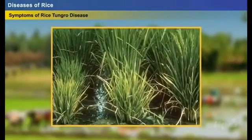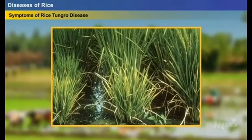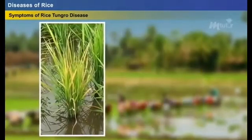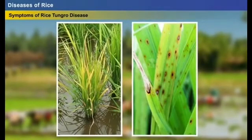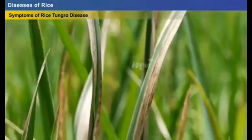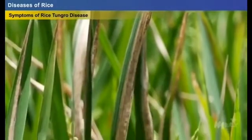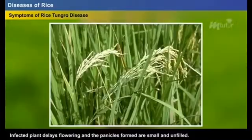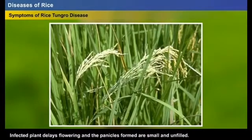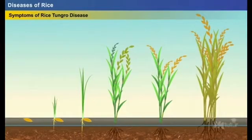Symptoms of rice tungro disease: the infected plants show stunted growth or reduced tillering. The leaves turn yellow or orange-yellowish in color and may develop rust-colored spots. The discoloration starts from the leaf tip and extends down to the blade and lower portion of the leaf. Infected plants delay flowering, and the panicles formed are small and unfilled, or may have discolored grains. These viruses can affect the rice plant at any growth stage, particularly during the vegetative stage.